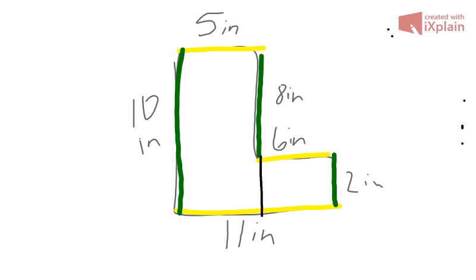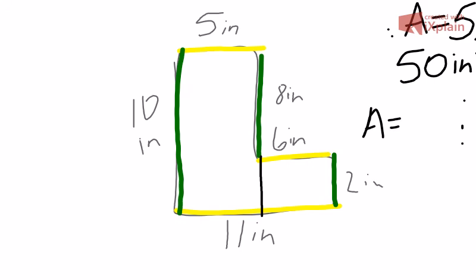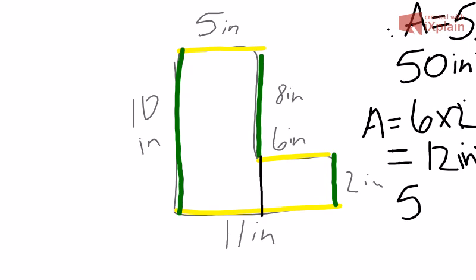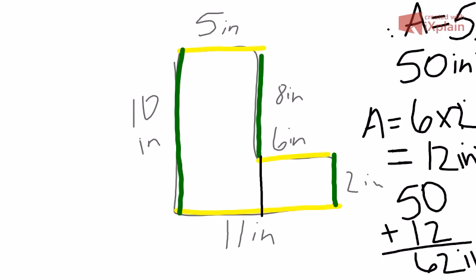Now I'm going to use the 10 and the 5 for one rectangle: area equals 5 times 10, which is 50 inches squared. Then for the other shape, which uses the 6 and the 2: area equals 6 times 2, which is 12 inches squared. Remember, we're working in inches squared.